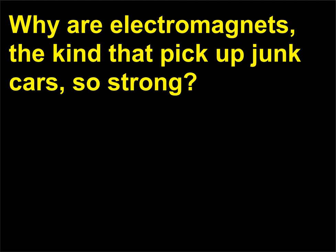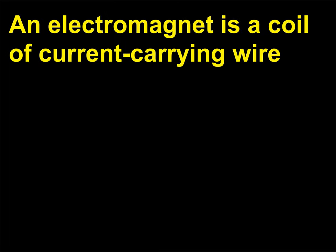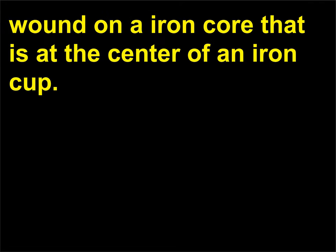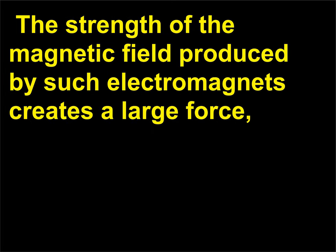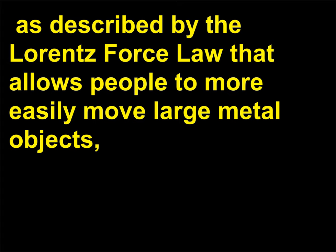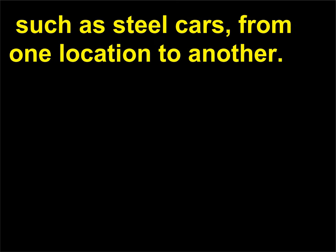Why are electromagnets — the kind that pick up junk cars — so strong? An electromagnet is a coil of current-carrying wire wound on an iron core that is at the center of an iron cup. The magnetic field created by current in the wire is strengthened by the iron core. The strength of the magnetic field produced by such electromagnets creates a large force, as described by the Lorentz force law, that allows people to more easily move large metal objects such as steel cars from one location to another.